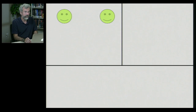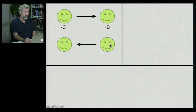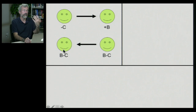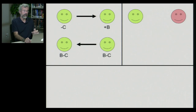Consider two individuals where one is nice to the other: he suffers an initial cost of minus C, and the other gets an initial benefit of plus B. When the other individual reciprocates, there have been two exchanges, and as a result each individual has had one beneficial experience and paid the cost one time — so they each have a net B minus C.